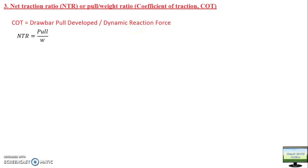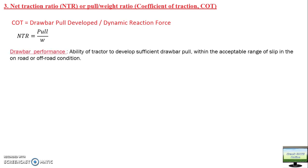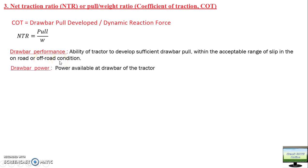What is draw bar performance? Draw bar performance is the ability of a tractor to develop a sufficient amount of draw bar pull within the acceptable range of slip — the slip should not be too high and should not be too low — in both on-road and off-road conditions. That is what draw bar performance is.